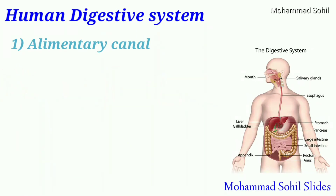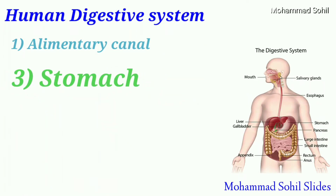Third, the stomach. The stomach is a J-shaped muscular organ situated on the left side of the abdomen. The muscles of the stomach also undergo peristalsis and push the food forward. In the stomach, the food is mixed thoroughly with the gastric juice secreted by the gastric glands present in the stomach wall. There is a sphincter muscle at the lower end of the stomach which releases the partially digested food into the small intestine.